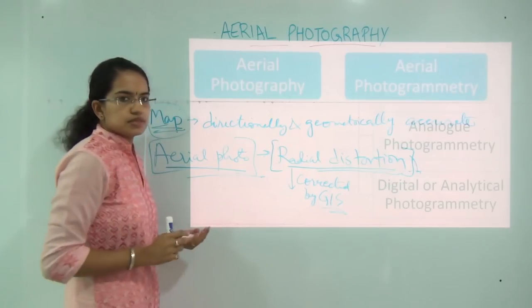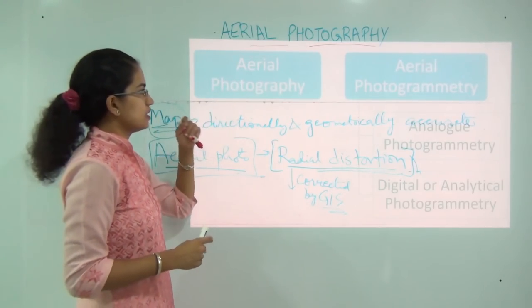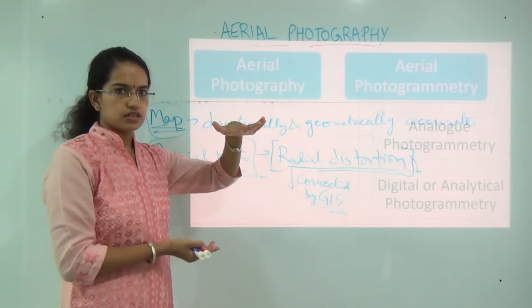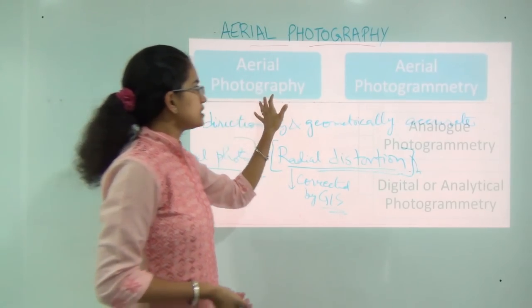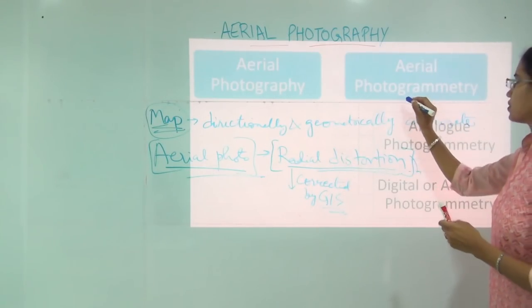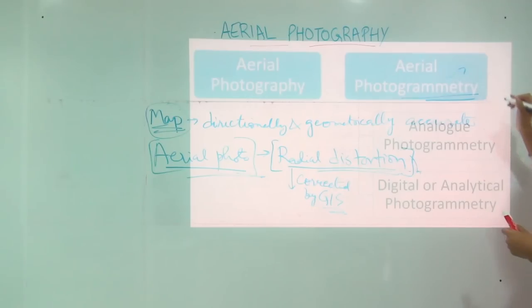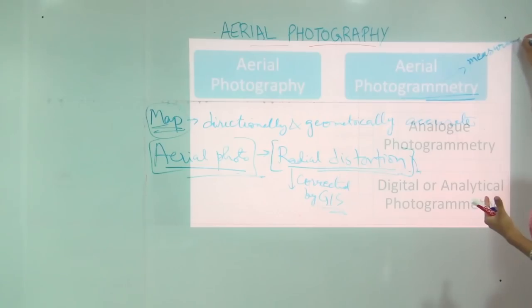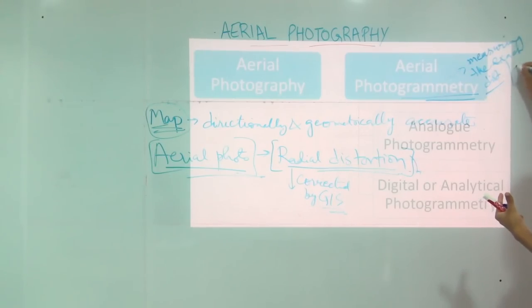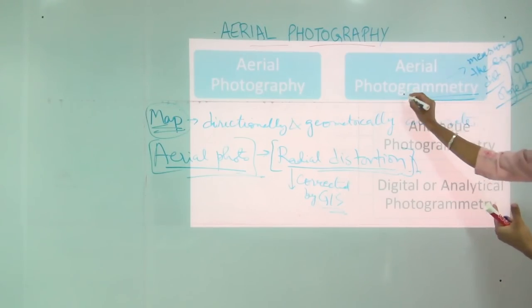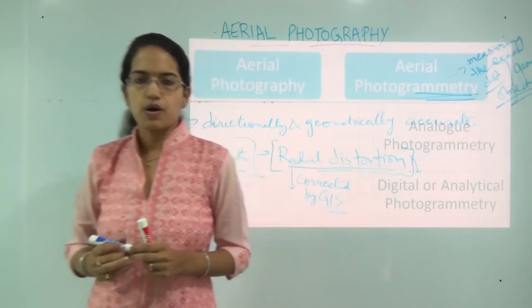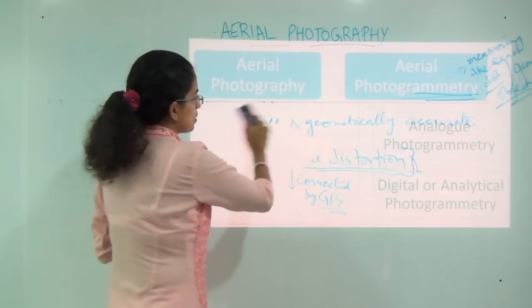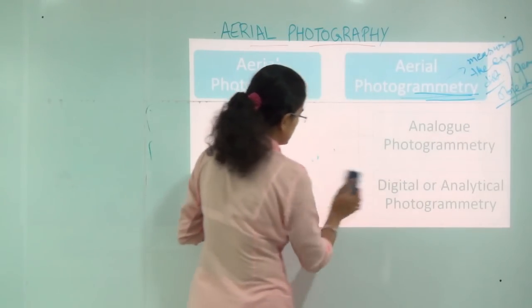Let's talk about a few terms. When we talk about aerial photography, we understand it is a kind of capturing the face of the Earth. What is the difference between aerial photography and photogrammetry? Photogrammetry is the science of measuring geometrical distances or exact geometric positions. So aerial photography just talks about taking pictures of the Earth, while photogrammetry talks about measuring or mapping the geometrical positions.